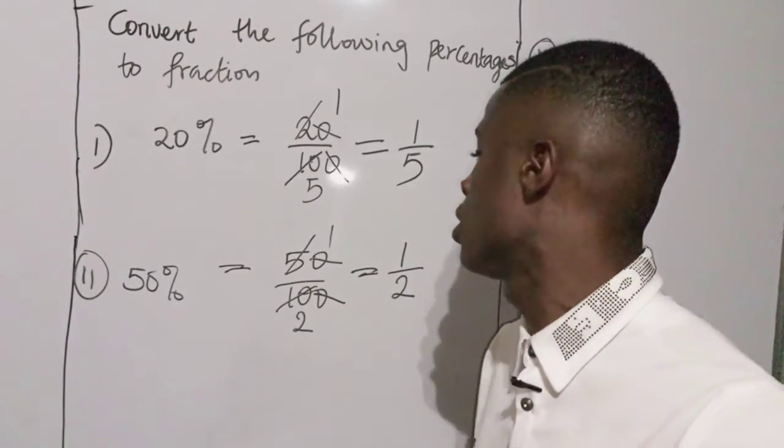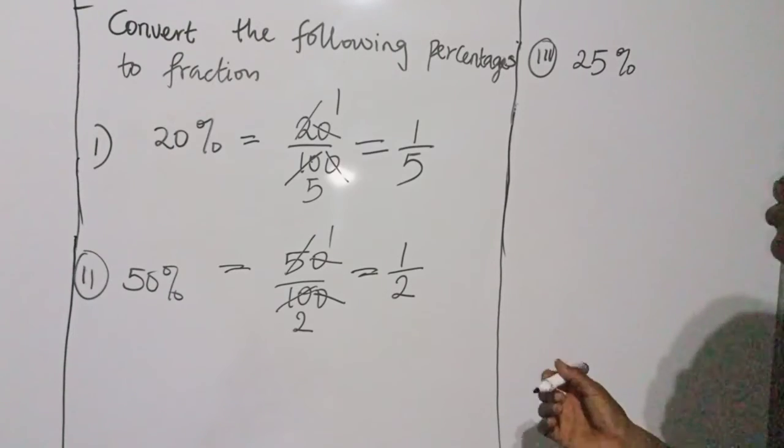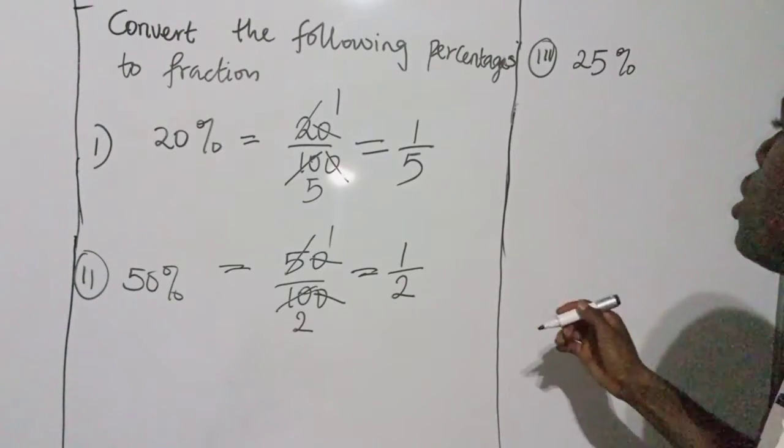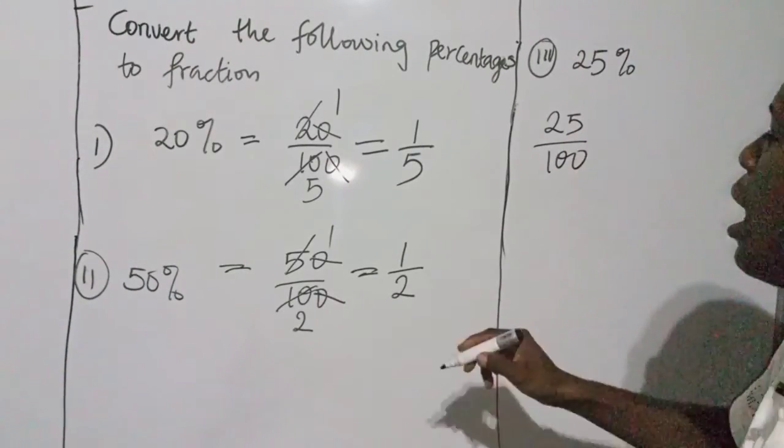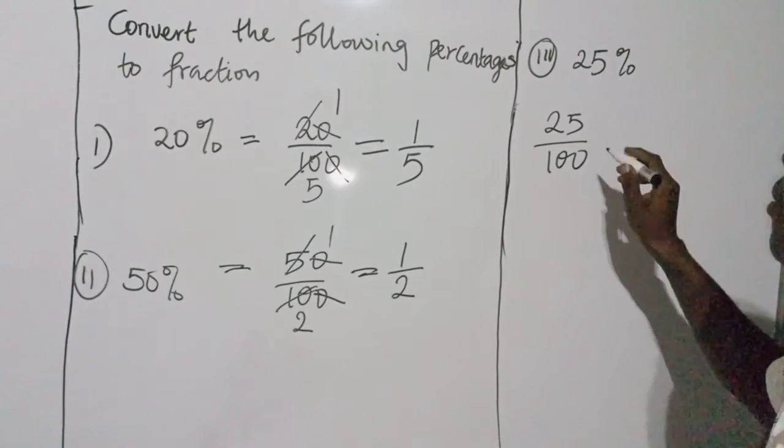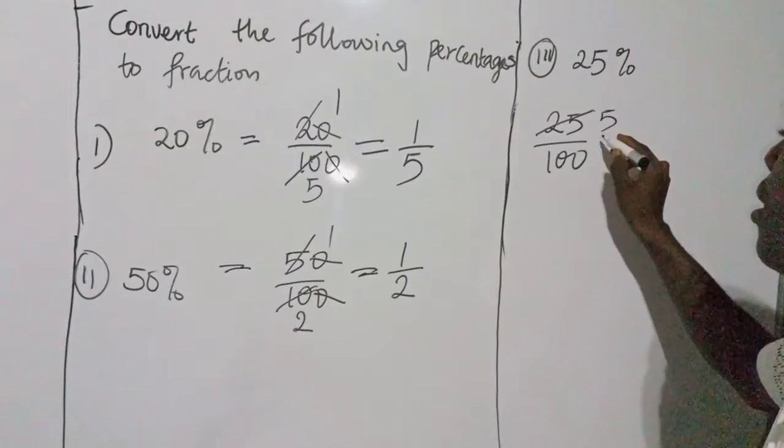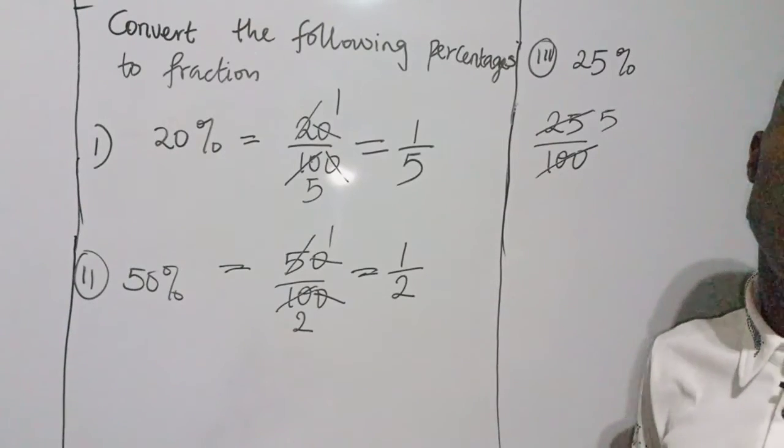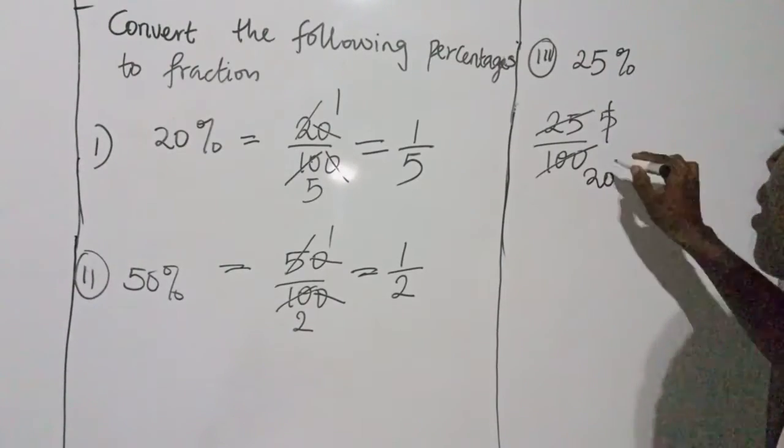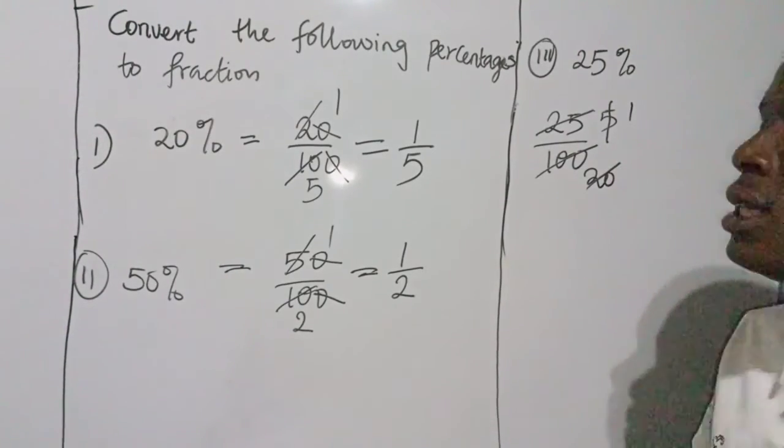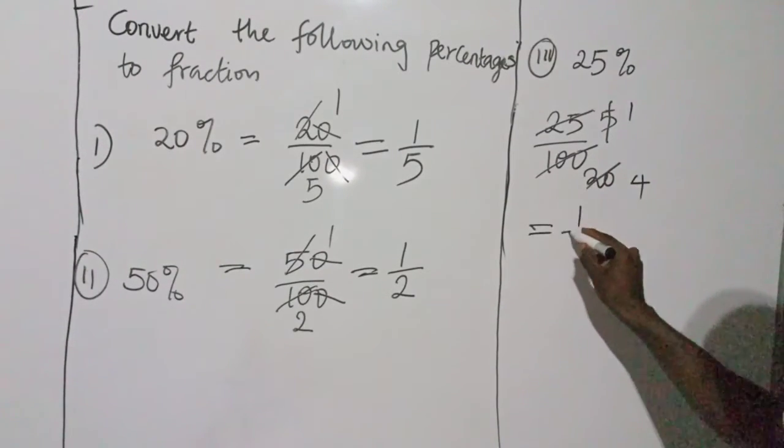Let's take the last one. The last one says 25%, 25%. I have 25 over 100, I have expressed this in percentages. Then at this point, five divides 25, I'm having five. Five divides 20, I'm having four. So at the end I'm having one over four. So one over four is the fraction of 25%.